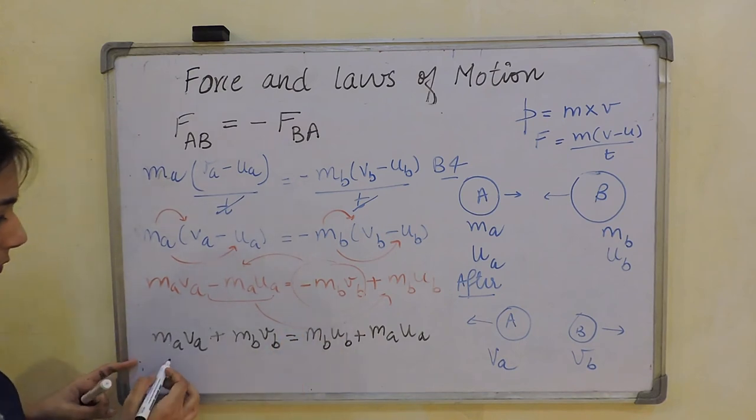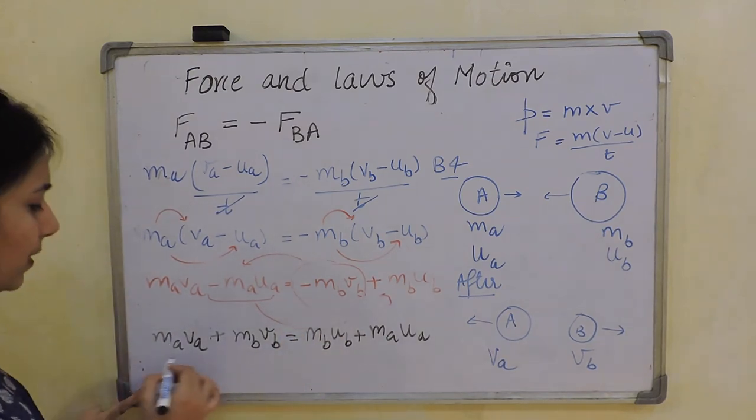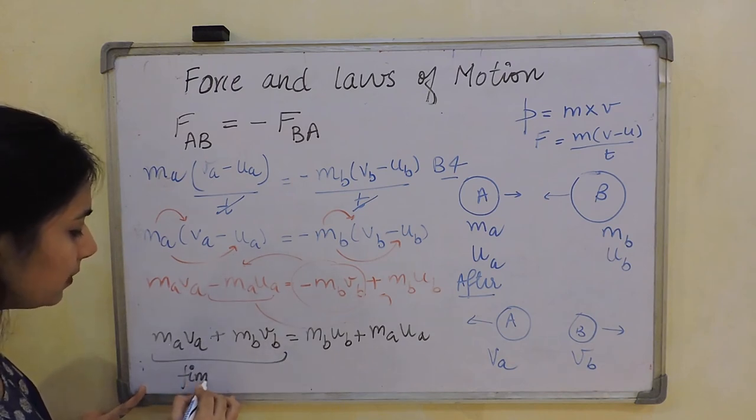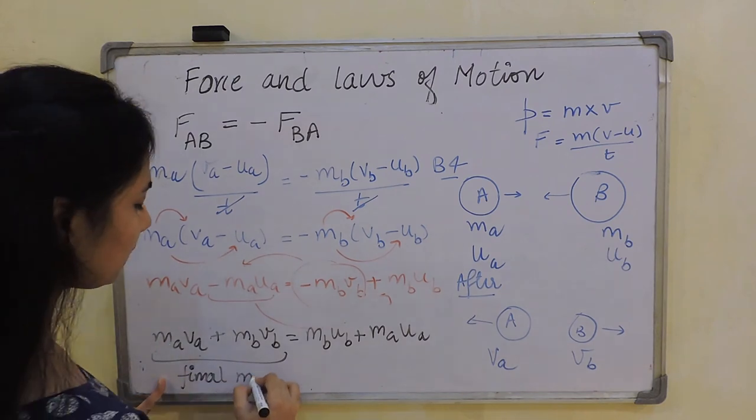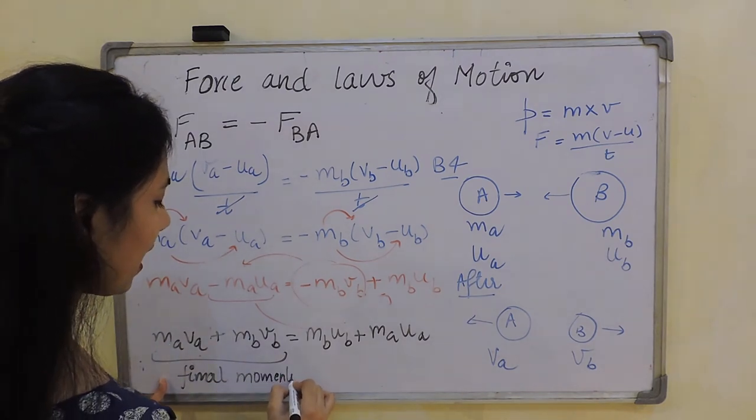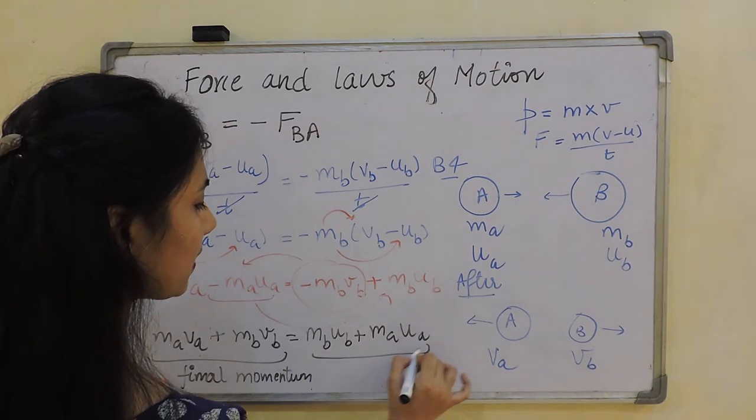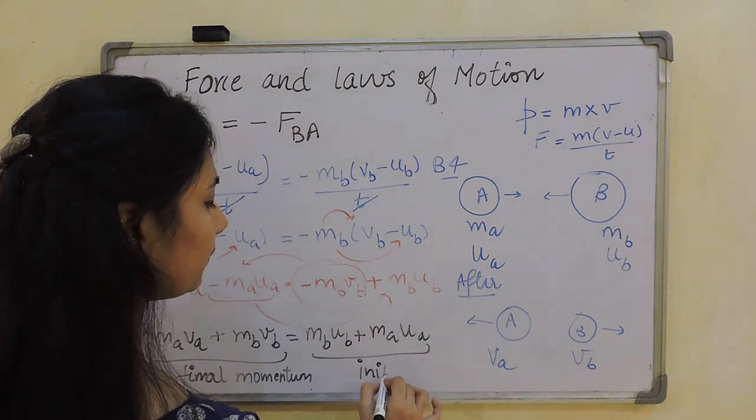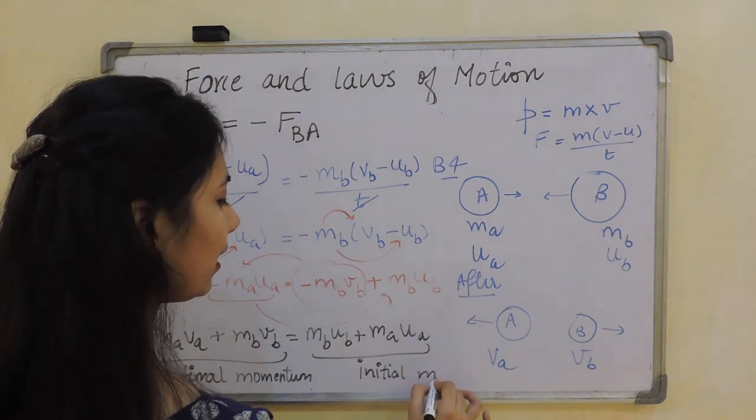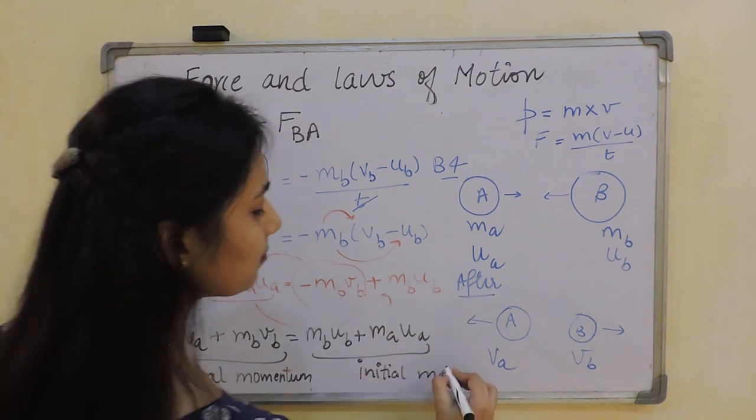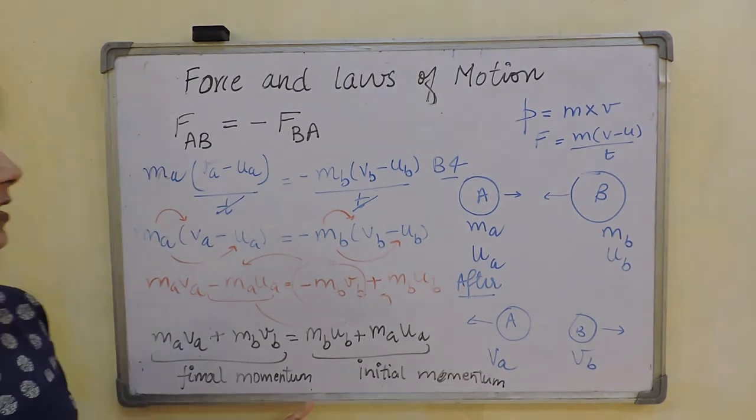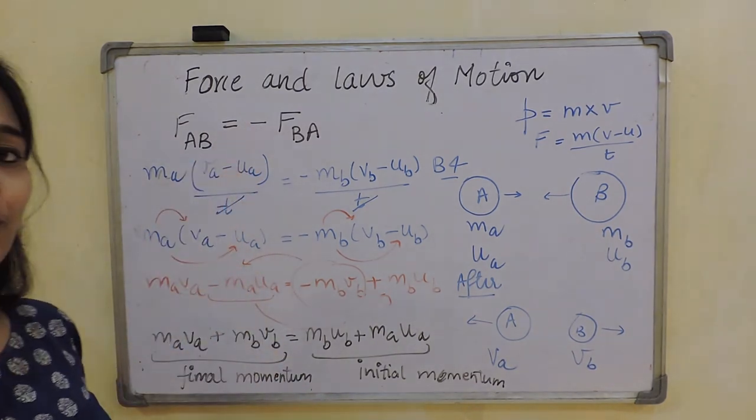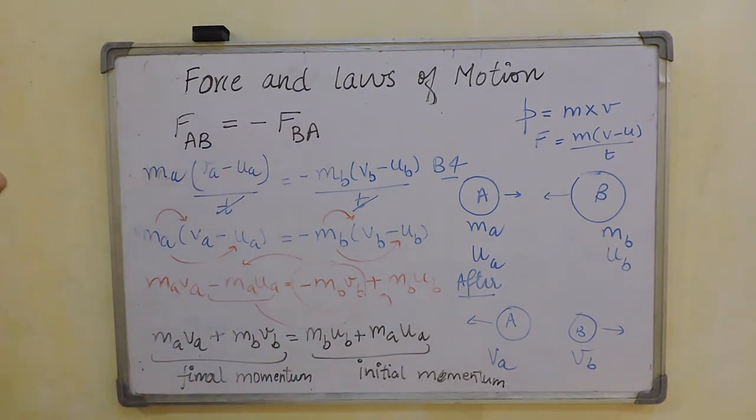Now from this, have a look. This is my vₐ, v_b, so this is my final momentum, since momentum is m into v. This is final momentum. And this one has u_b and uₐ, so this is my initial momentum. So I can say that after collision, my initial momentum and the final momentum are the same. Hence this proves the law of conservation of momentum.